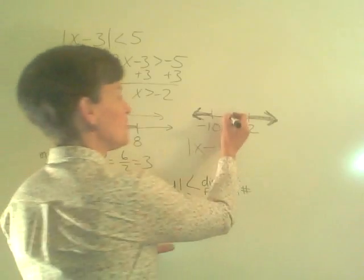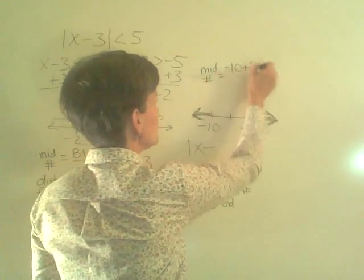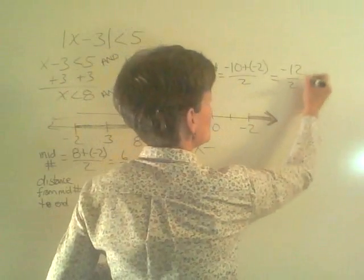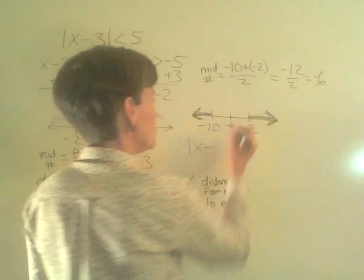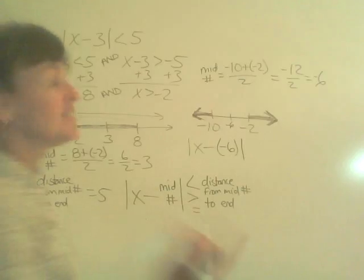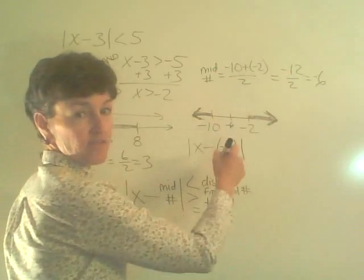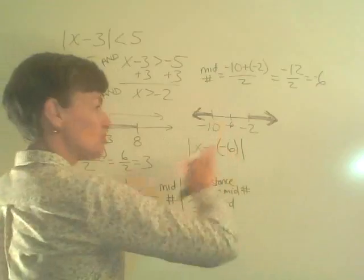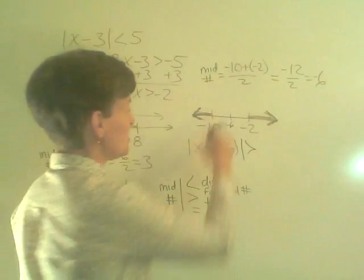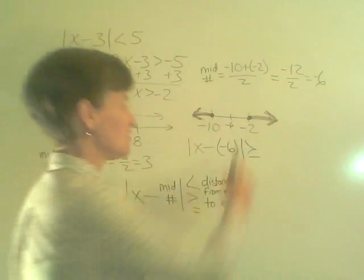So I add negative 10 and negative 2, then divide by 2. Negative 10 plus negative 2 is negative 12, over 2 is negative 6. So negative 6 is my middle number, giving me x minus negative 6 inside the absolute value signs. Now I need to pick an inequality sign. An absolute value 'or' graph is shaded on both ends, so I'm going to pick greater than or equal to — we'll use closed circles.